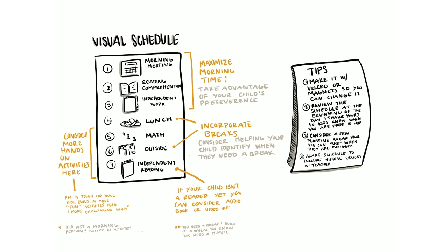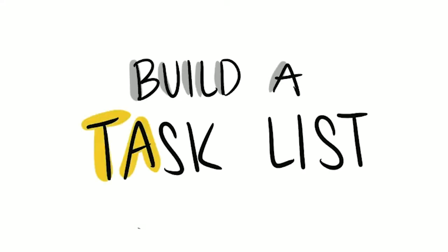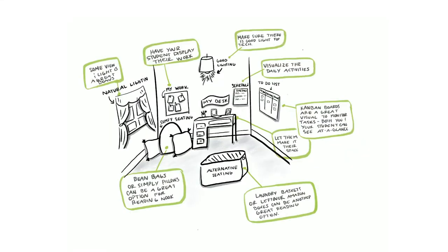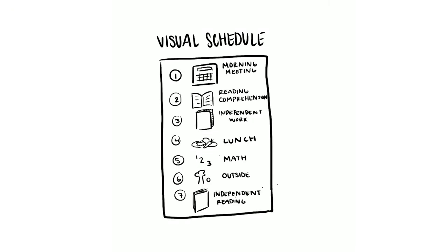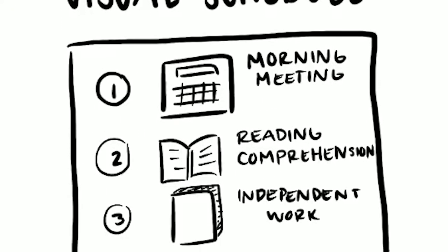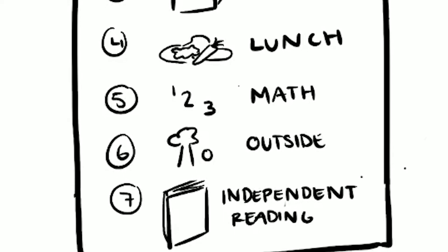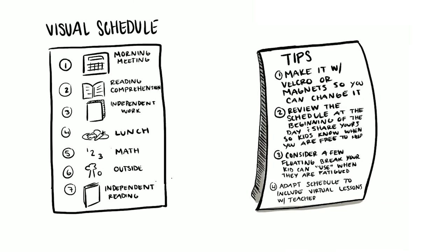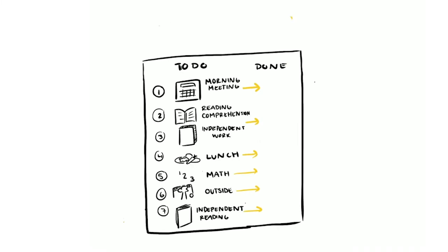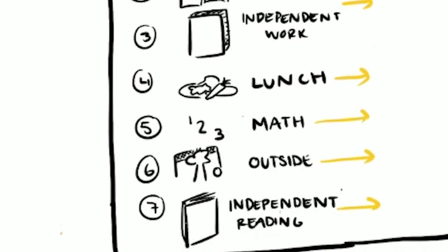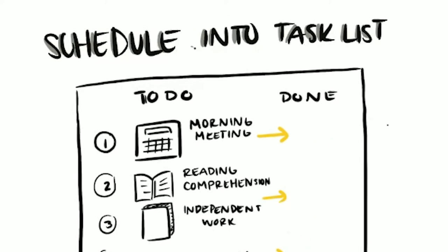Task lists are very important as you build independence for your student. We do this as adults with our own to-do lists. One way is creating a schedule and modifying it by laminating it or using magnets, so students see their schedule for the day. As they complete each task, they can move it to the second column — one column for all activities to-do, and the right-hand column for when they're done.